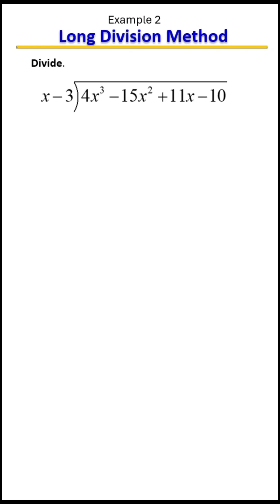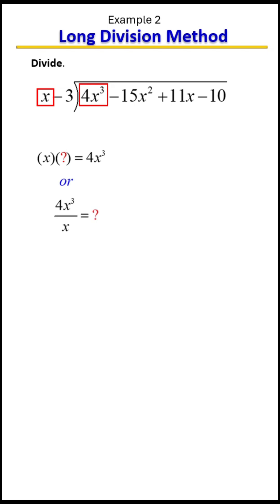Let's divide using the long division method. Look at the outside far left and underneath the division symbol far left, and ask yourself: what do you need to multiply x with to get 4x cubed? You can also look at it as dividing the term under the division symbol by the term on the outside far left. Either way, the answer is 4x squared — we're going to place that above the squared term.